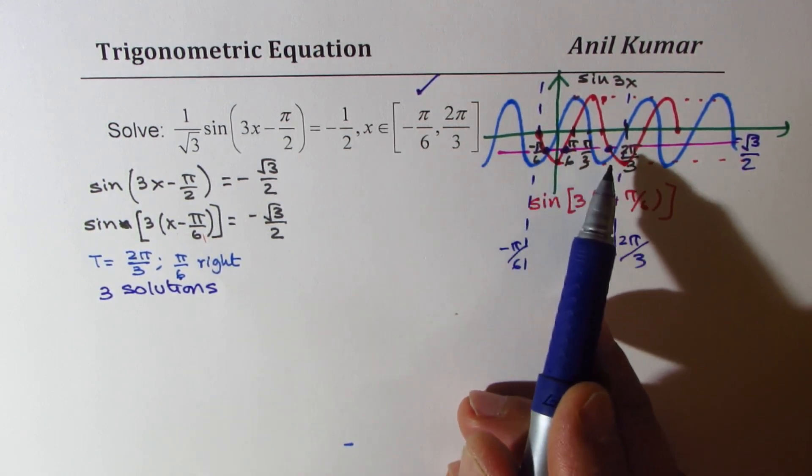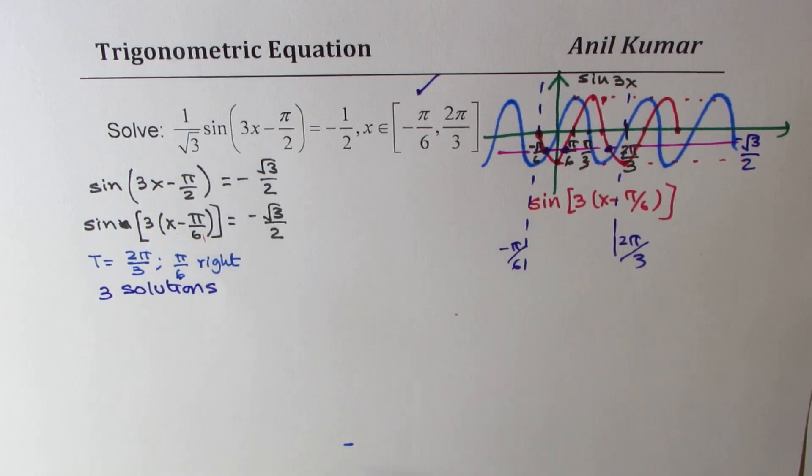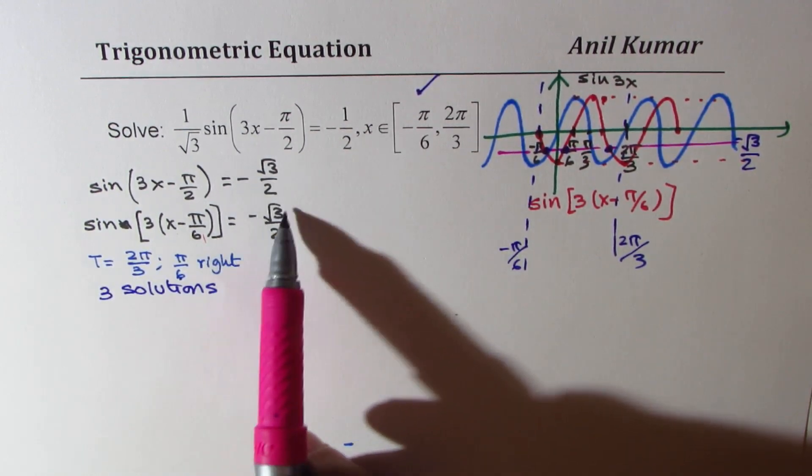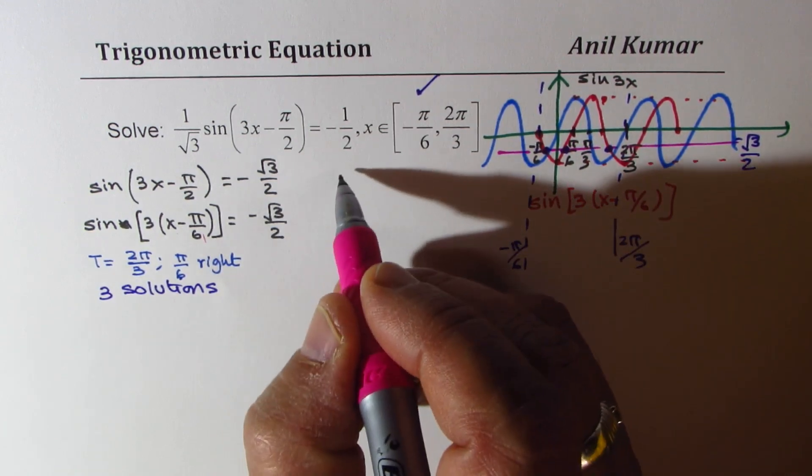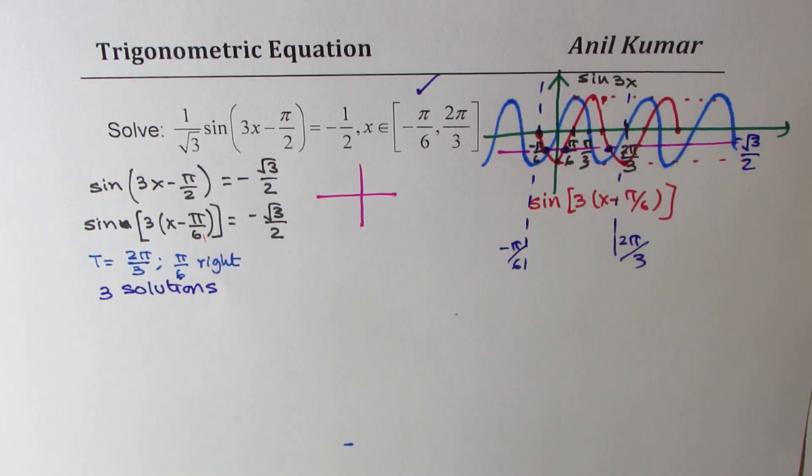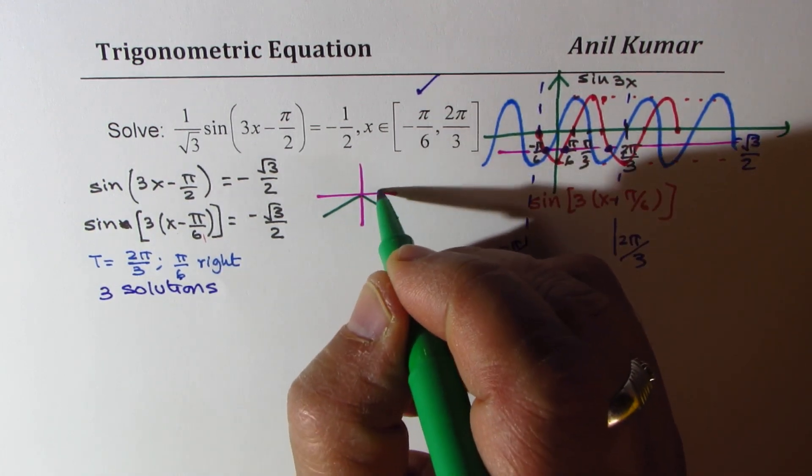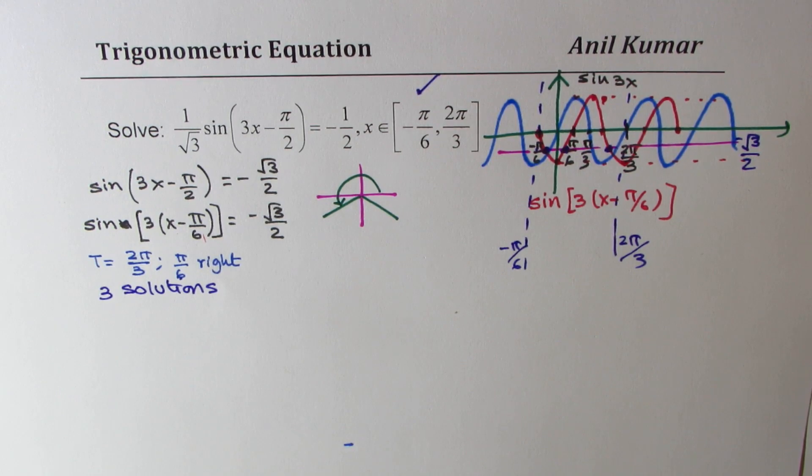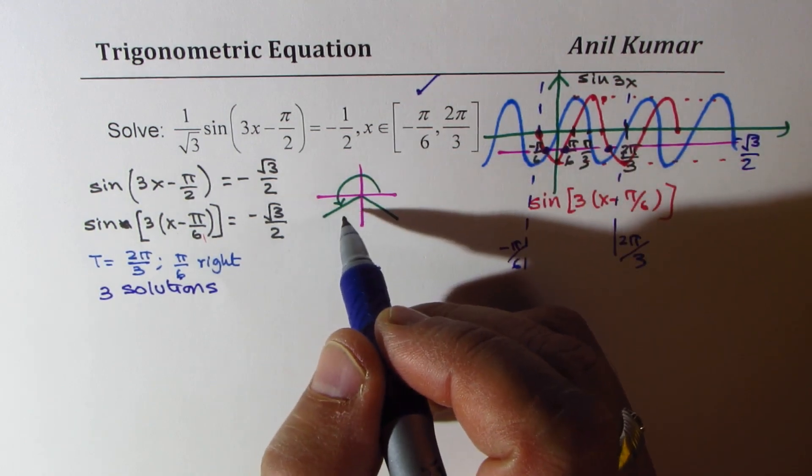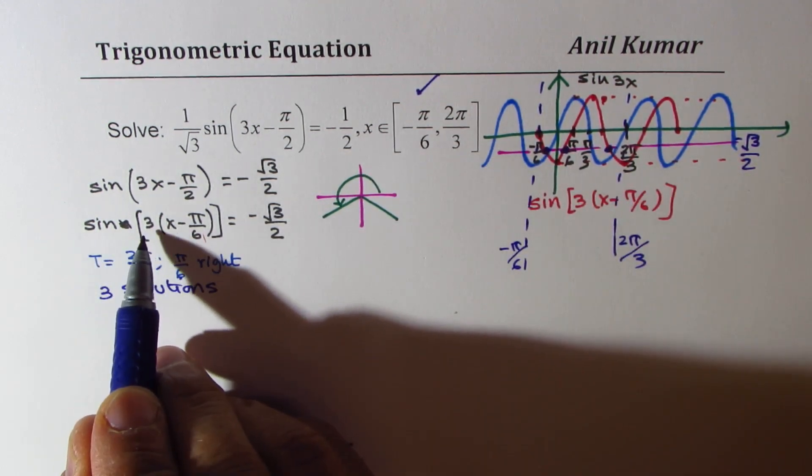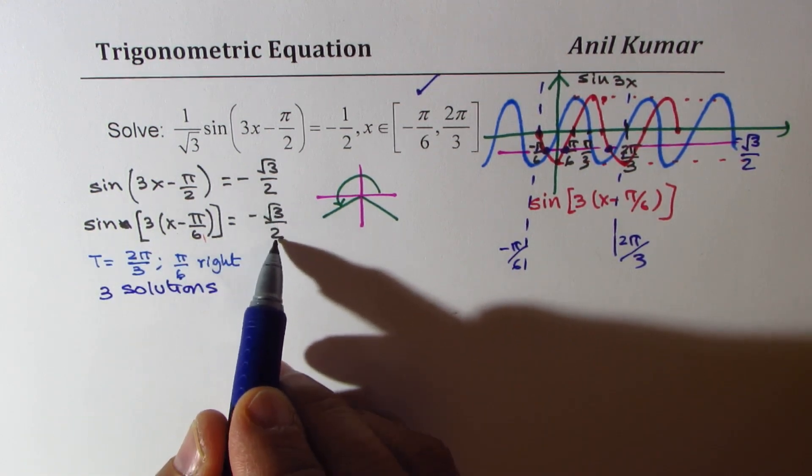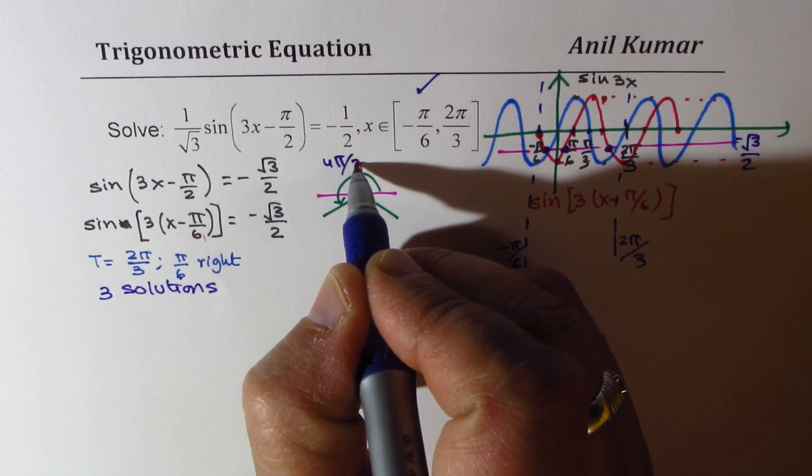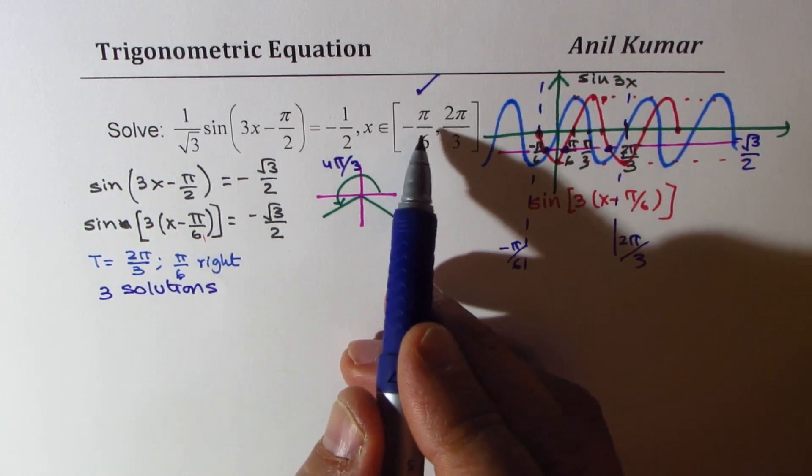So we have to find these three solutions. Sometimes it is only to find number of solutions. Now let's solve. Minus square root 3 over 2 means we are looking for solution in quadrant 3 and 4. So that gives you one solution.